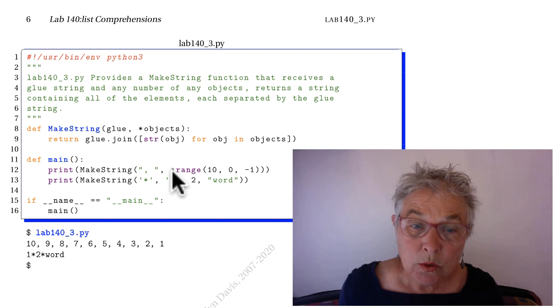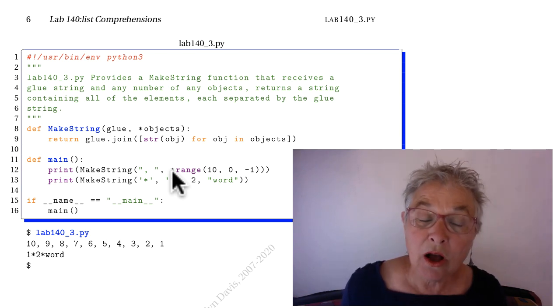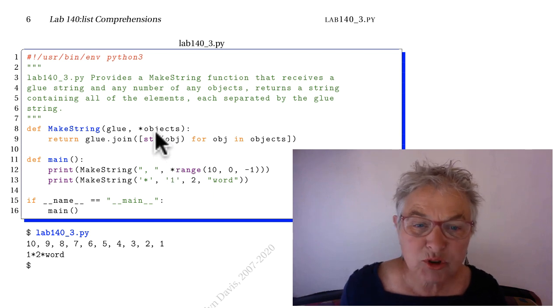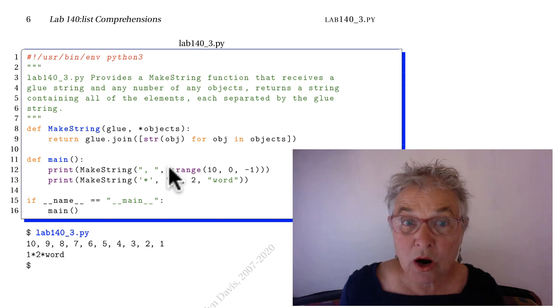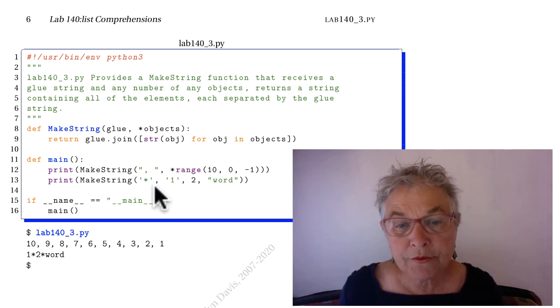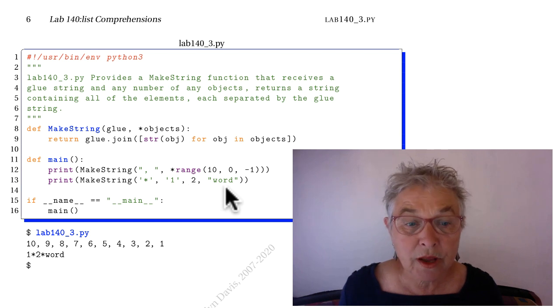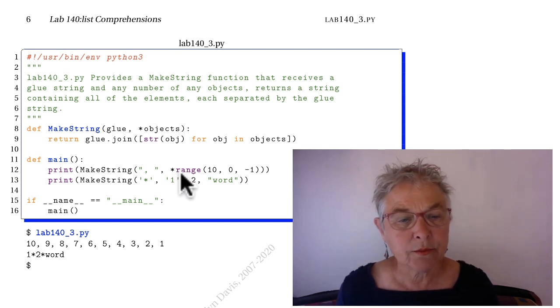You'll see that we tried it here with comma space separated and because these objects get collected in the call, here we have splayed out the range 10, 9, 8, etc. into the call which got collected in the objects. This one, we have an asterisk for our separator, our glue string, and we have three different objects that go into the objects. And there we see them.